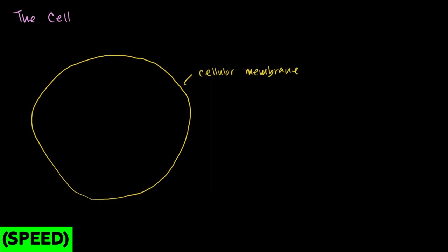Maybe the most important thing that defines a cell — as you've probably seen in the DNA videos — is its DNA. What defines what a living organism is, is its DNA. So all cells have DNA inside them. This is more of an anatomy of a cell video than necessarily about function, but we'll go into the function because we need to know what these different parts do.